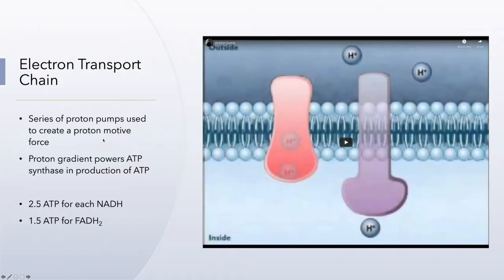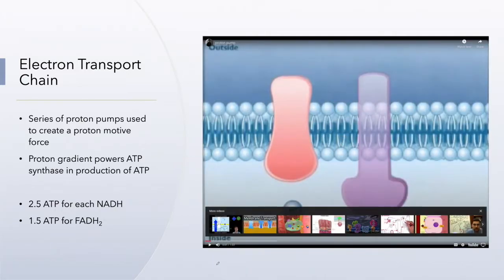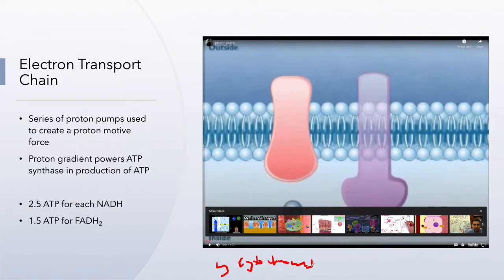The electron transport chain starts as a series of proton pumps, referred to as cytochromes. These cytochromes are called proton pumps. They will harness energy from free electrons and use that energy to pump protons across a phospholipid bilayer, across a cell membrane. Proton pumps can be used in multiple ways — for transport, to create proton motive force — particularly in prokaryotes. Let's take a look at a short video on what a proton pump does and how it functions.